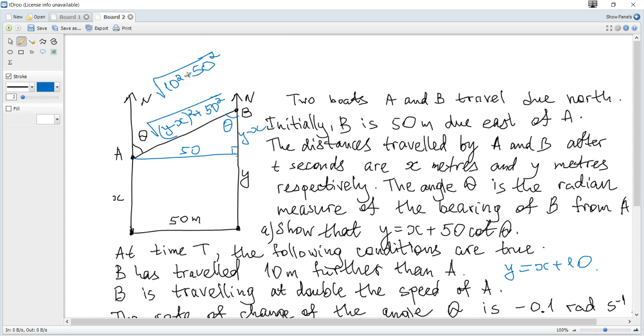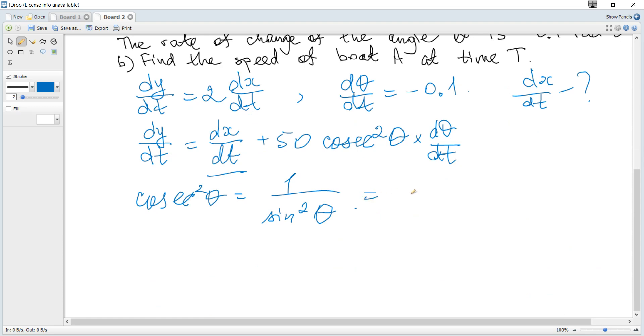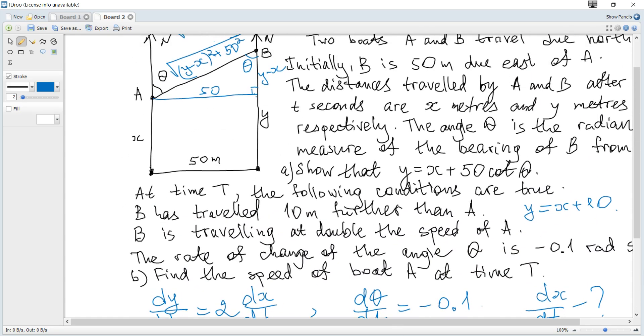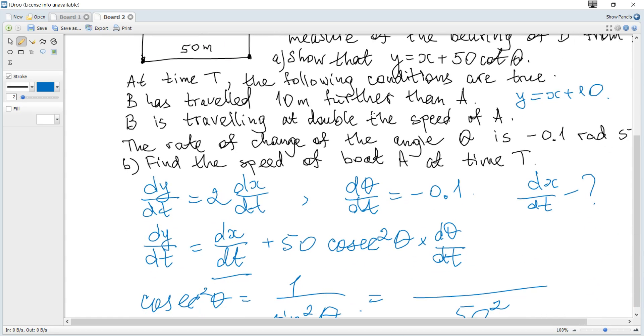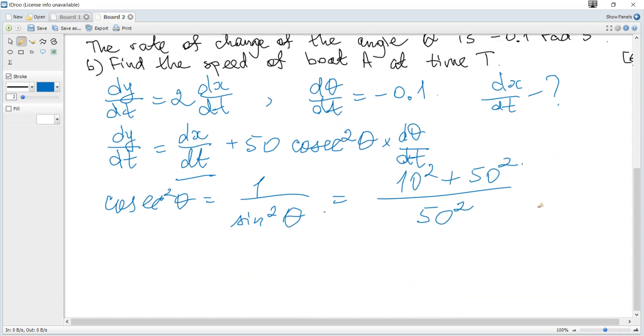So hypotenuse becomes a square root of 10 squared plus 50 squared. And we can see that 1 over sine squared becomes the hypotenuse squared divided by 50 squared. So it becomes 10 squared plus 50 squared divided by 50 squared. And we can split it and it becomes 0.04 plus 1 or 1.04.